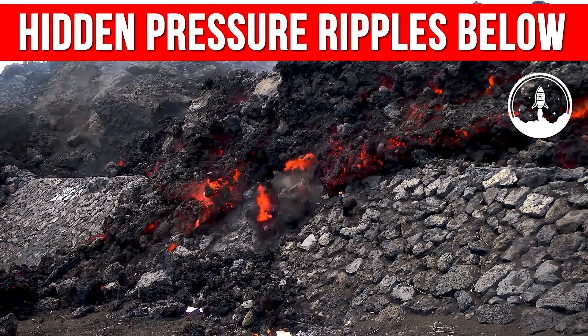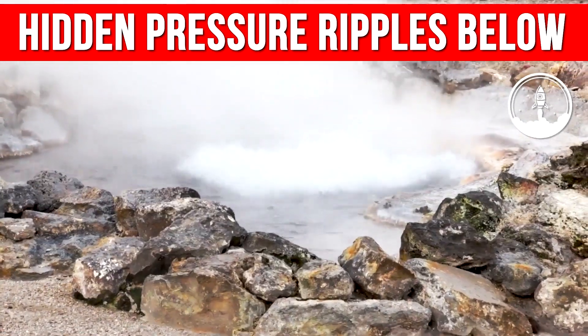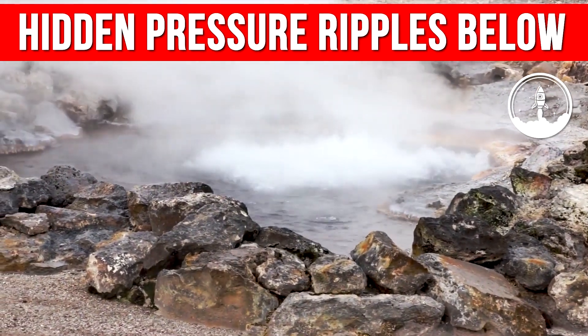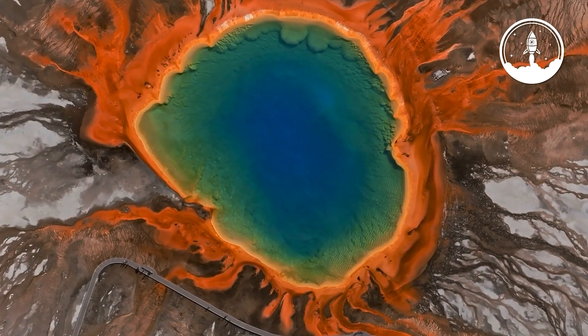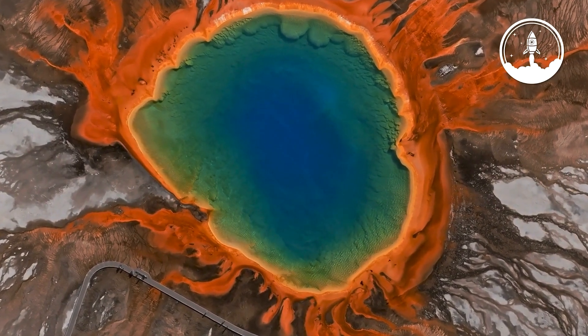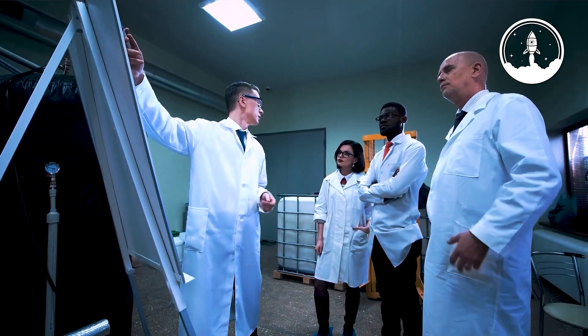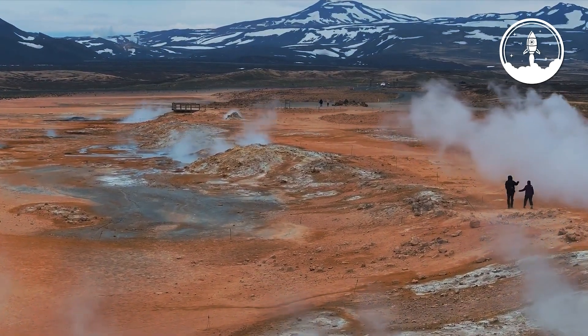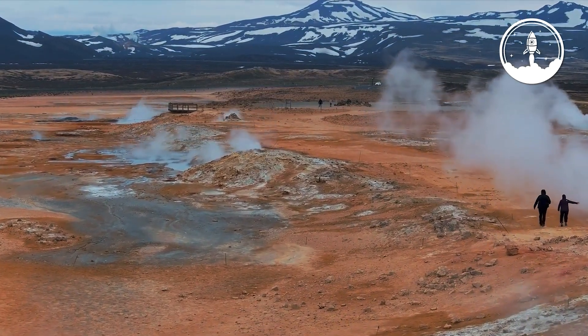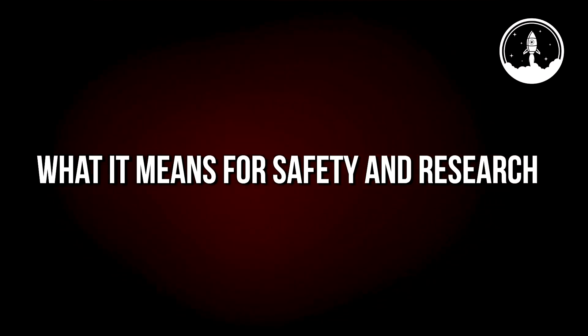But smaller-scale intrusions or shifts in the semi-molten rock miles below could still create pressure changes that ripple upward into the hydrothermal system. That interaction between magma, heat, rock, and water is what fuels Yellowstone's energy in the first place. So while scientists aren't calling this a sign of imminent eruption, they are watching closely to see if these sounds coincide with any other subtle changes in temperature, gas output, or ground movement.